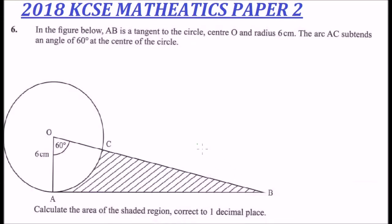For us to be able to calculate the area of the shaded region, we need to calculate the area of the triangle, that is triangle OAB, and then we minus the area of the sector, sector OAC.